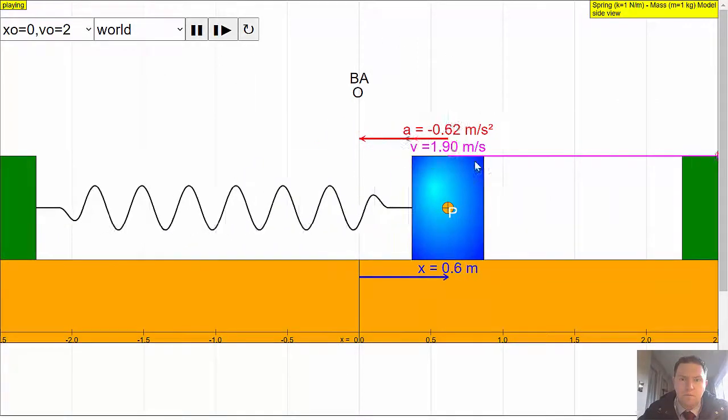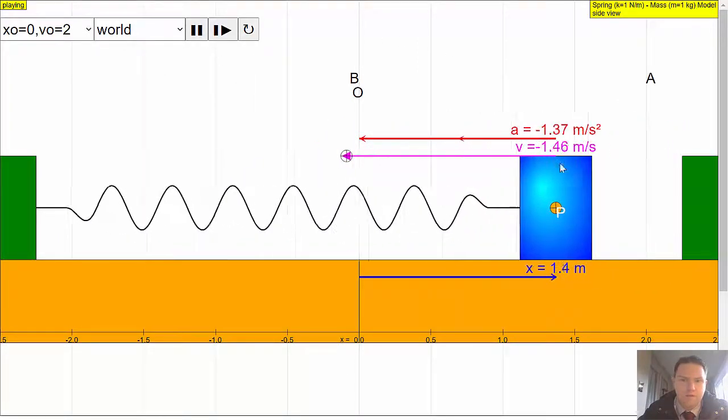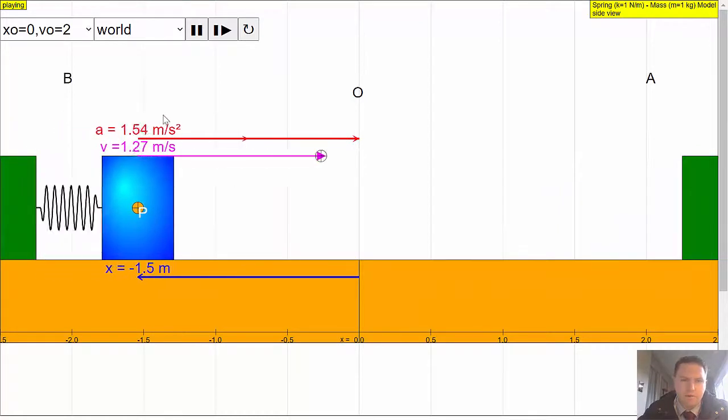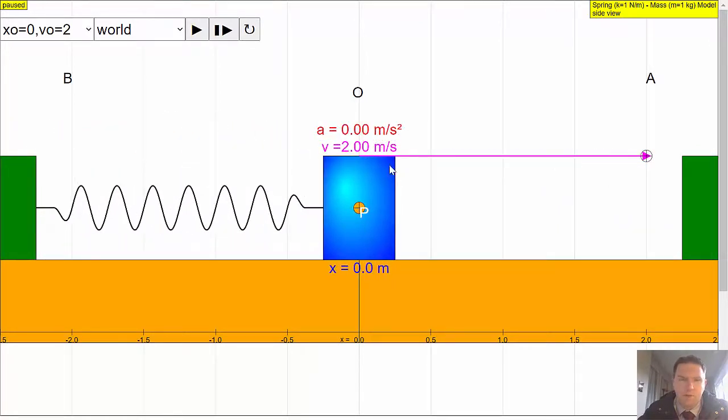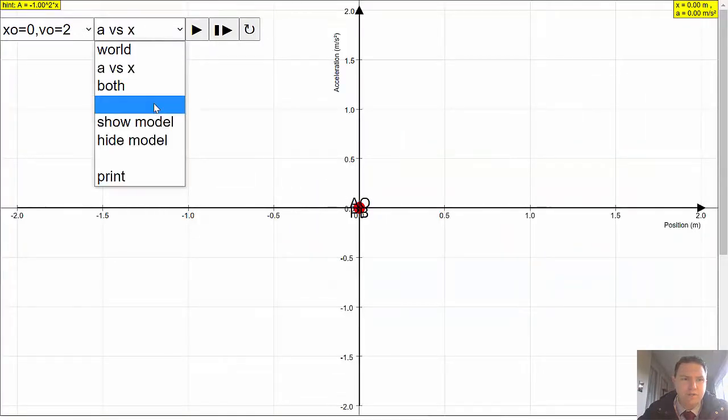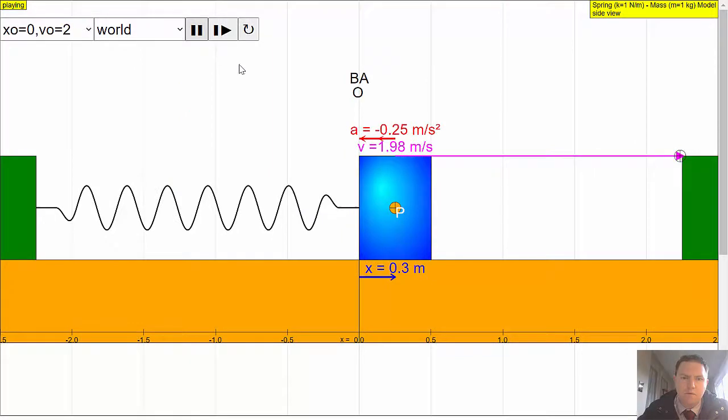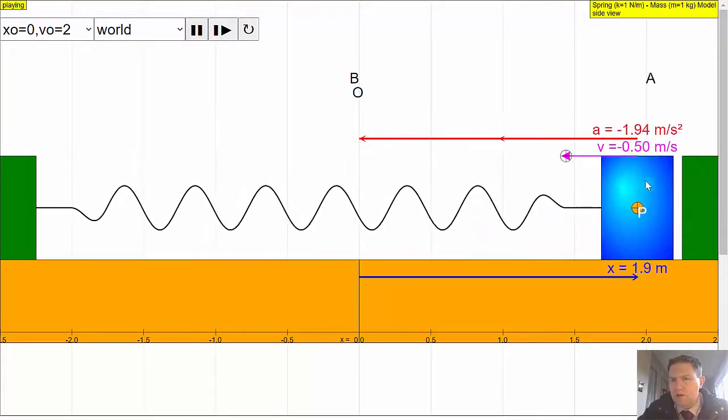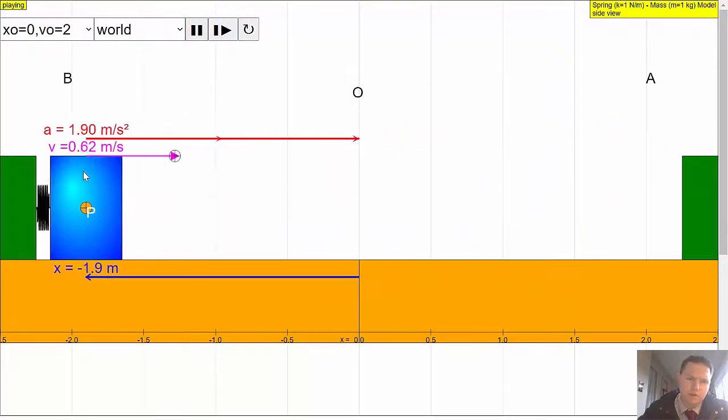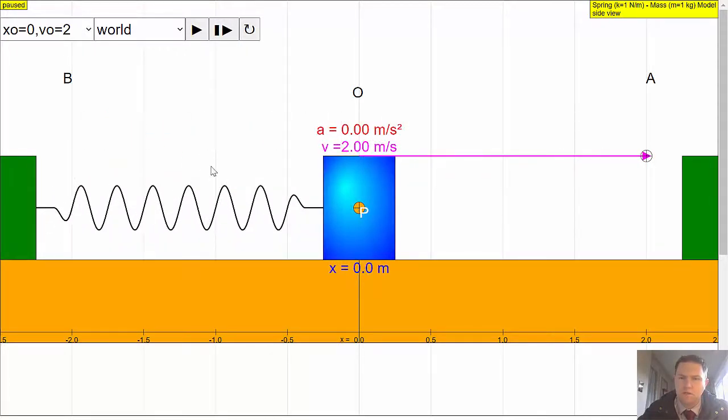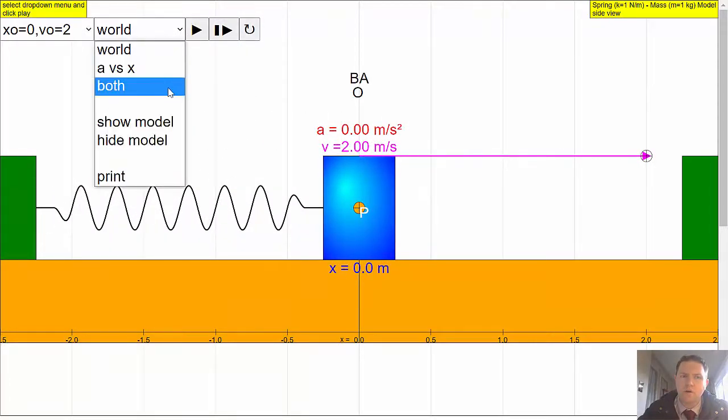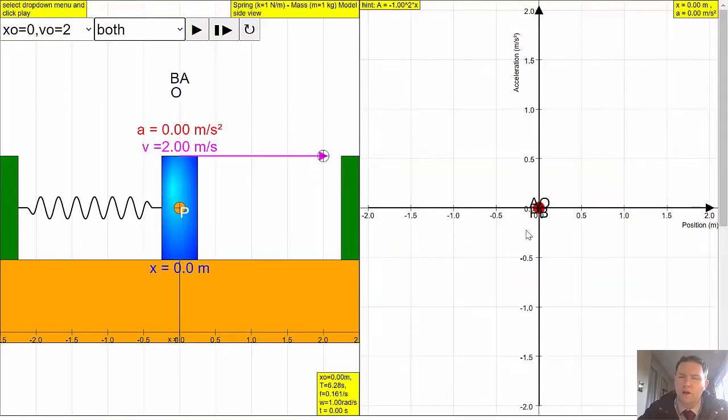So now we've got the same model again. This time we've got the acceleration vectors on it. You can see that acceleration is maximum at maximum amplitude and minimum at the center. If you were to draw an acceleration versus position graph, how do you think that looks? Have a think about it. Pause the video.